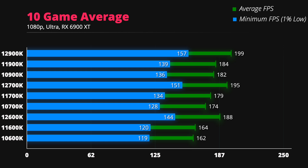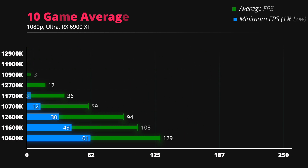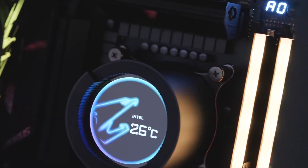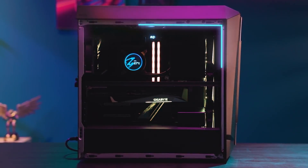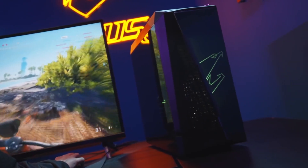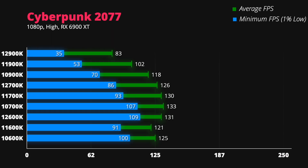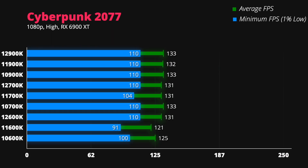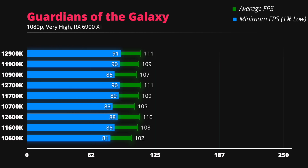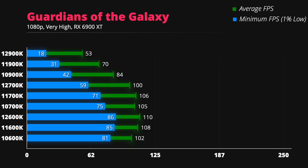However, you should not forget that these results are the best-case scenario, as the benchmarks were done at 1080p resolution using a high-end RX 6900XT graphics card. The performance difference will be much lower if you use a less powerful GPU or increase the resolution — very well reflected in GPU-intensive games such as Cyberpunk 2077 and Guardians of the Galaxy, where there is very little difference even at 1080p.